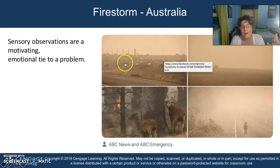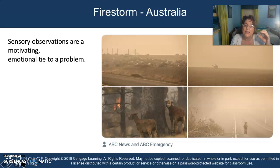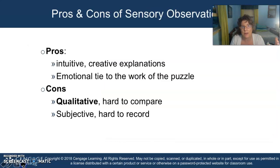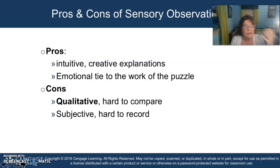These were really emotional, motivating ties to a problem or to an observation. Unfortunately, these are kangaroos that died in the fires in Australia — just really horrible, burned animals. It really keeps you motivated to solve climate problems when you have these qualitative observations. Some of the pros are that you're motivated to solve those problems. But the cons are that you have a hard time comparing your observations to another person's because they're all subjective.